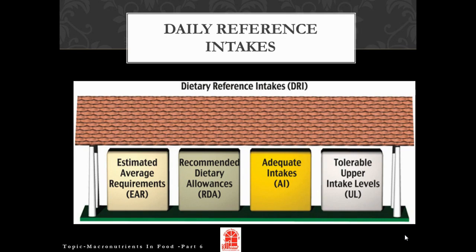DRI, or dietary reference intakes, is an umbrella term inclusive of four reference values: EAR — estimated average requirements; RDA — recommended dietary allowances; AI — adequate intakes; and UL — tolerable upper intake levels.